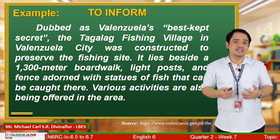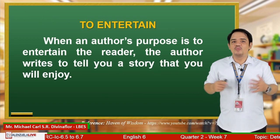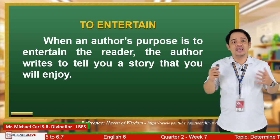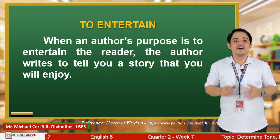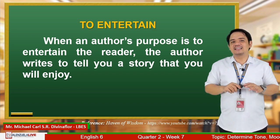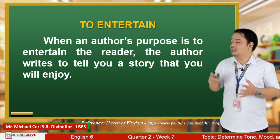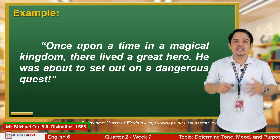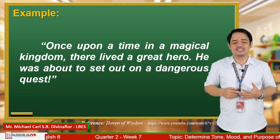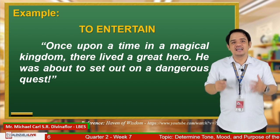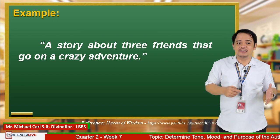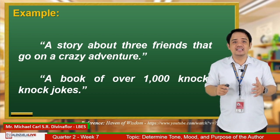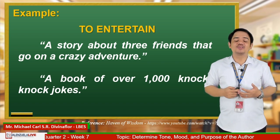Now let's talk about the other purpose: to entertain. When an author's purpose is to entertain the reader, the author writes to tell you a story that you will enjoy. Texts that aim to entertain usually go like: 'Once upon a time, in a Magical Kingdom, there lived a great hero. He was about to set out on a dangerous quest.' Another example: a story about three friends that go on a crazy adventure, or a book of over 1,000 knock-knock jokes — all of these are written to entertain the readers.